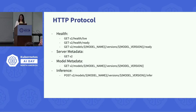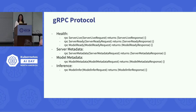We have defined a set of HTTP protocols for the model server to perform liveness checks, readiness checks, and to check if a model is ready to take incoming requests. We can also use this protocol to check a server's metadata, a model's metadata, and most importantly, run inference. Similarly, we have a set of gRPC protocols for health, state, server metadata, model metadata, and inference. With the standard protocol, we can easily integrate with multiple model servers and clients can send requests consistently.